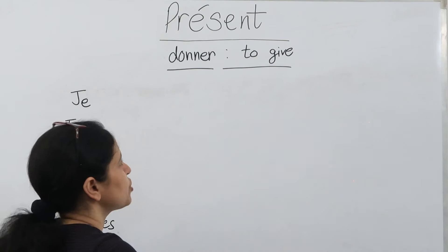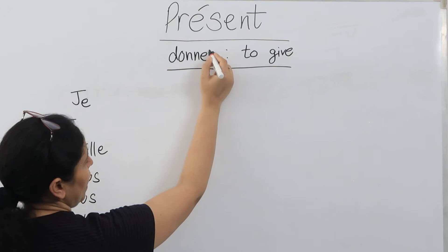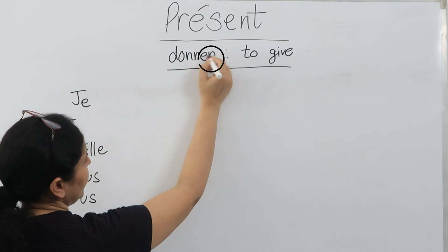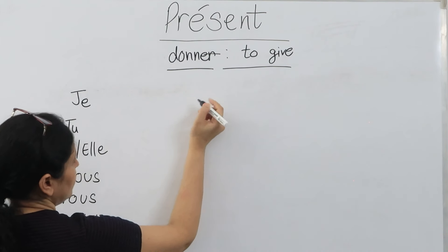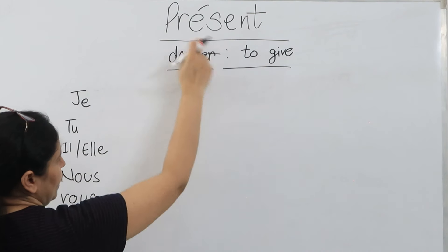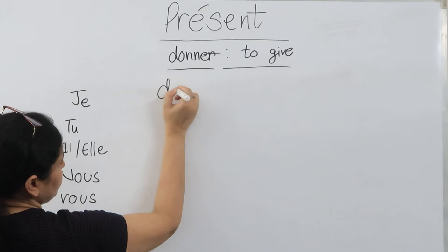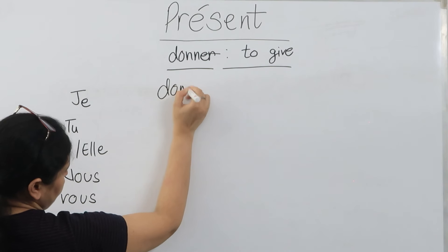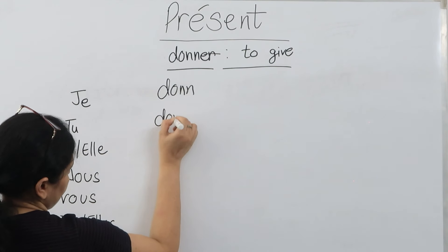Now we'll follow a few steps. The first step is you have to drop the ending. We'll drop this -er ending and write the leftover spellings — the stem — for the entire conjugation.